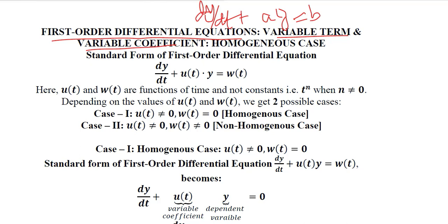The first case within this possibility will be of homogeneous type. As we know, the very first standard form of the first-order differential equation is this, in which w(t) and u(t) are the two terms. One of them is the coefficient and the other one is the term without any variable, or the independent variable, because you cannot see any y on this side.